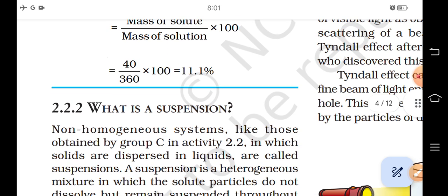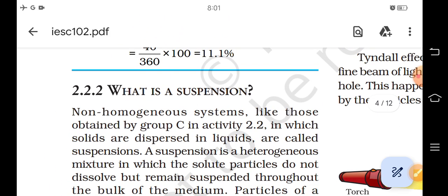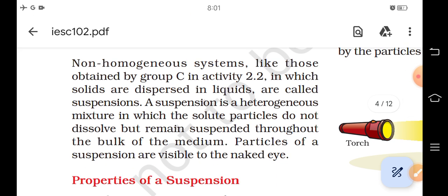What is a suspension? Non-homogeneous systems like those obtained by group C in activity 2.2, in which solids are dispersed in liquids, are called suspensions. A suspension is a heterogeneous mixture in which the solute particles do not dissolve but remain suspended throughout the bulk of the medium. Particles of a suspension are visible to the naked eye.